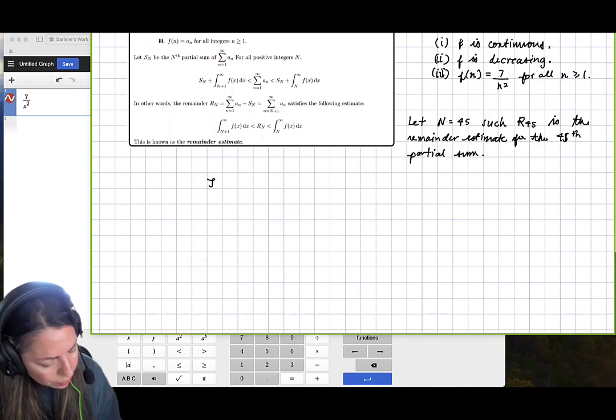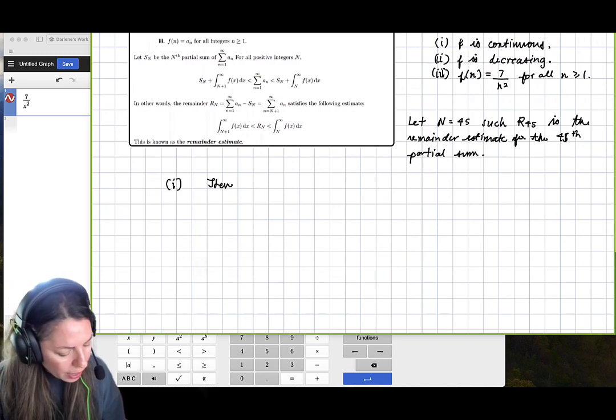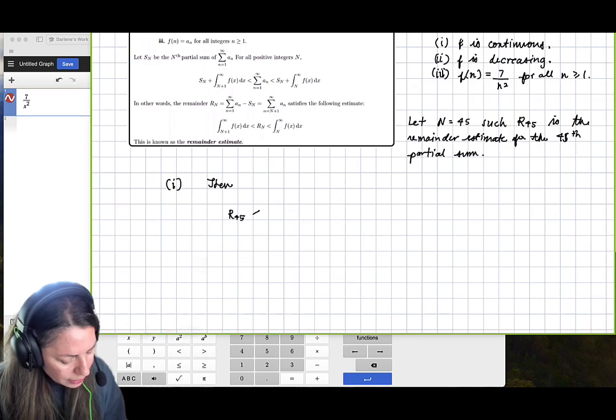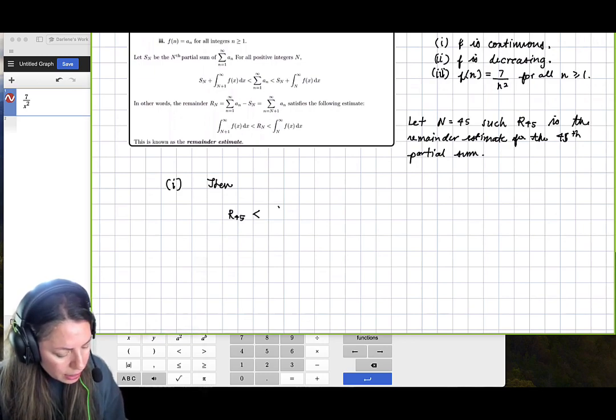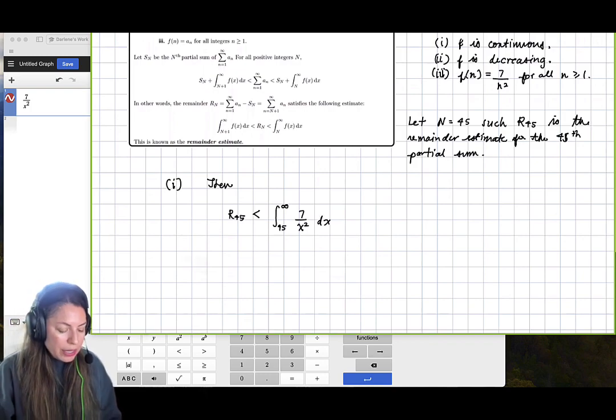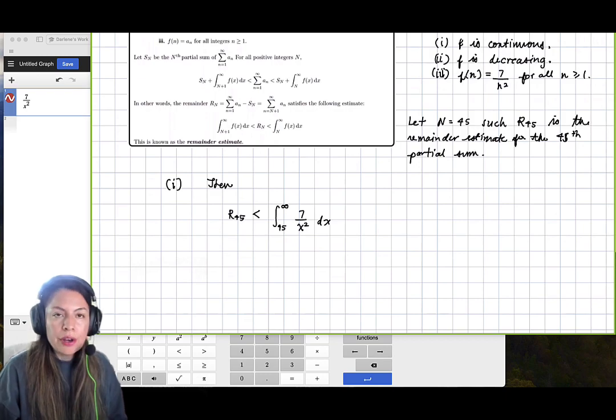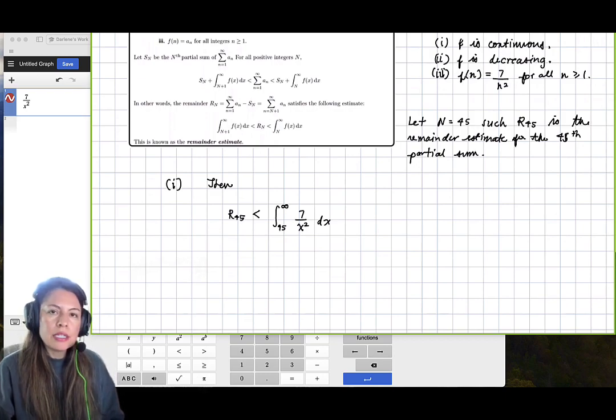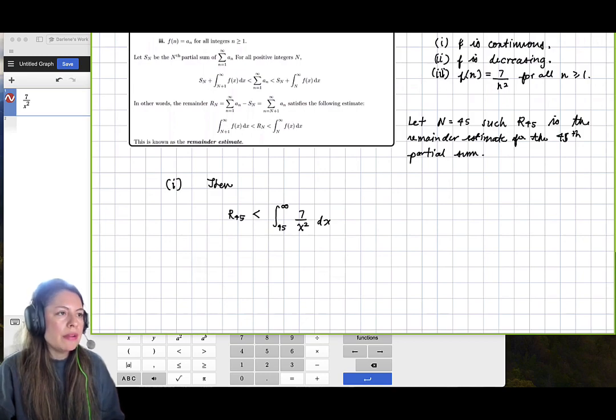Then we know that r sub 45 has to be less than the integral from 45 to infinity of f of x, in our case 7 over x squared dx. So we can see that this is an improper integral. We'll be using a limit for that top limit of integration.